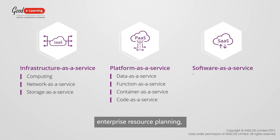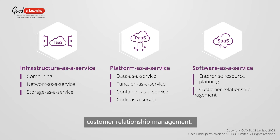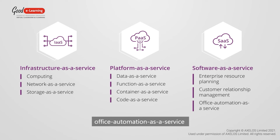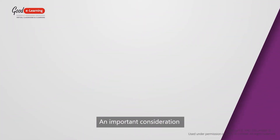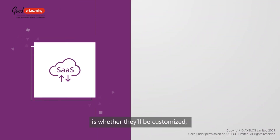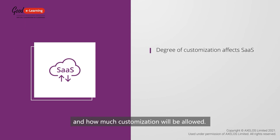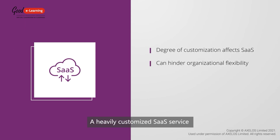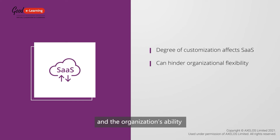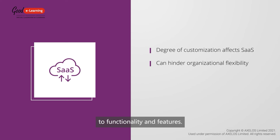SaaS offers enterprise resource planning, customer relationship management, office automation as a service and translation as a service. An important consideration for SaaS services is whether they'll be customized and how much customization will be allowed. A heavily customized SaaS service may hinder the flexibility of the service and the organization's ability to benefit from frequent updates to functionality and features.